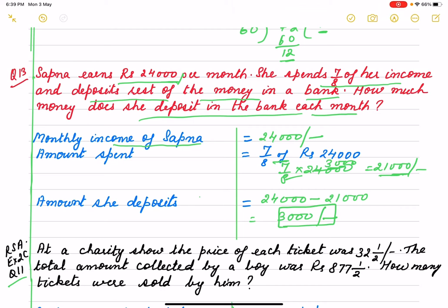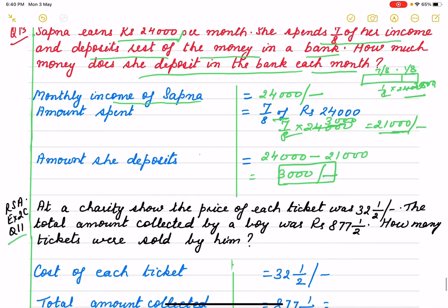If it is a word problem, write the statement clearly. But if it is MCQ, you can do it quickly — she spent seven by eight, so remaining is one eighth. One eighth of twenty-four thousand is three thousand rupees. This way also you can do it, but if it is a word problem, write the statement clearly.